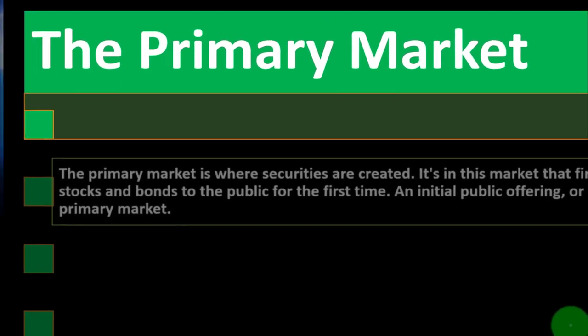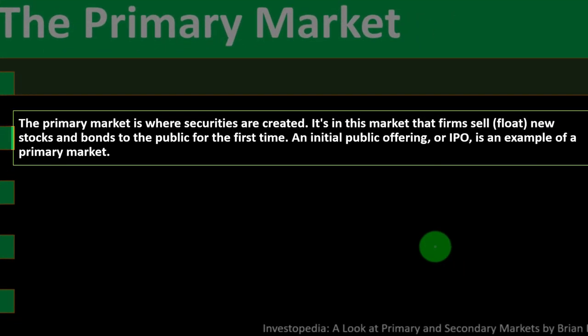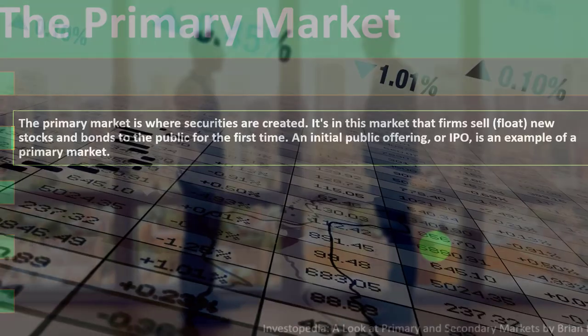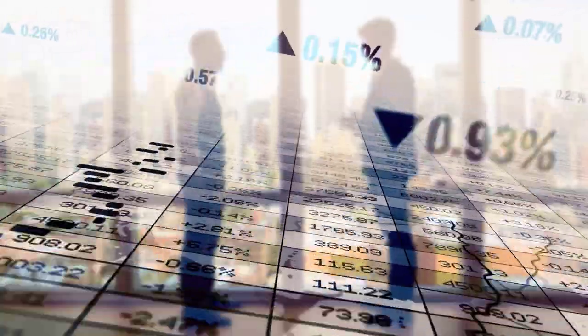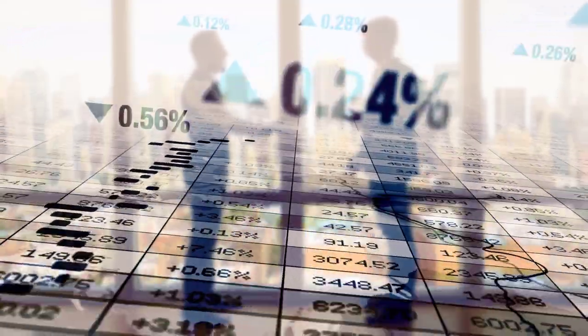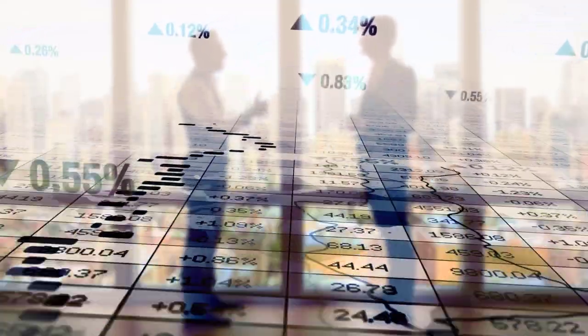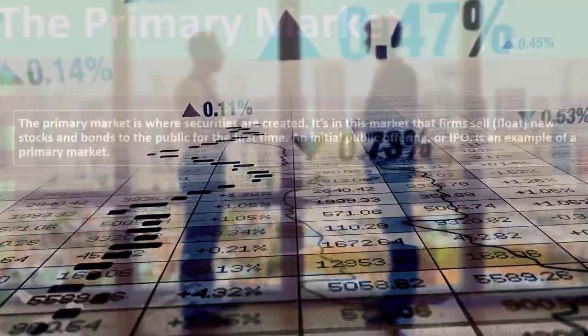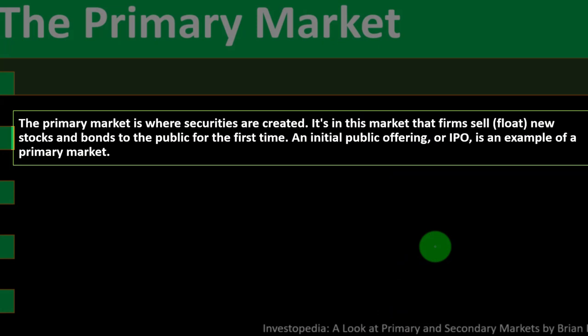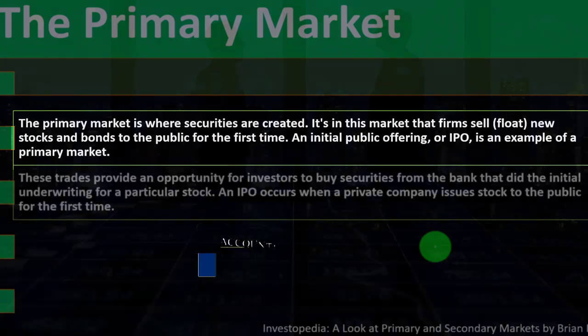The primary market is where securities are created. It's the market where firms sell new stocks and bonds to the public for the first time. We're issuing stocks, for example, coming directly from the company itself — not buying from a secondary investor. For the case of stocks, an initial public offering, or IPO, is an example of a primary market transaction.